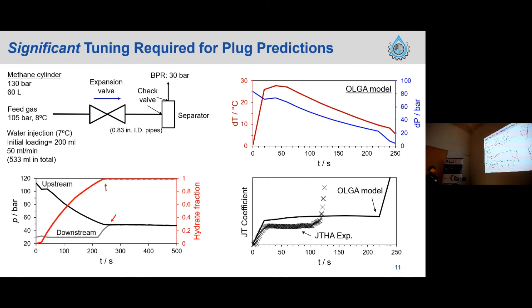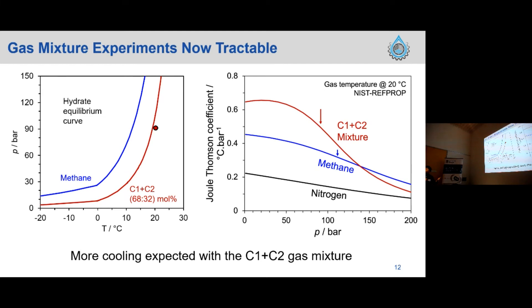My previous result was using just pure methane. But now we can expand the study to a wider range of temperature and pressure using methane and ethane mixture. As you can see in the hydrate filter curve, with this mixture, this will form hydrate at more moderate conditions. Also in terms of the Joule-Thomson coefficient, compared to pure nitrogen and pure methane, we can expect more Joule-Thomson cooling with the C1-C2 mixture.